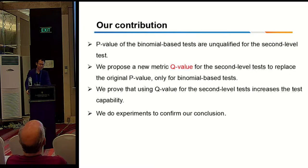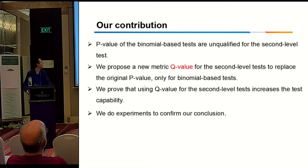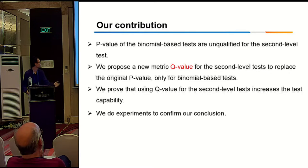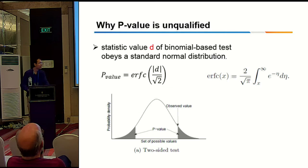And here I will talk about our contribution. We found that the P-value of the uniform test is unqualified for second level test, although it is proper to be used for first level test. And the statistic value of the uniform test obeys half-normal distribution. So the P-values are biased toward zero, and the problem comes from taking the absolute value.